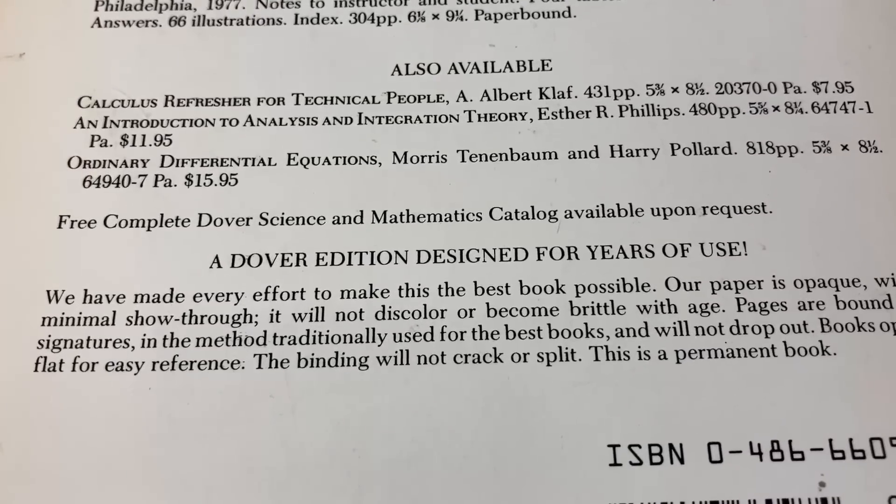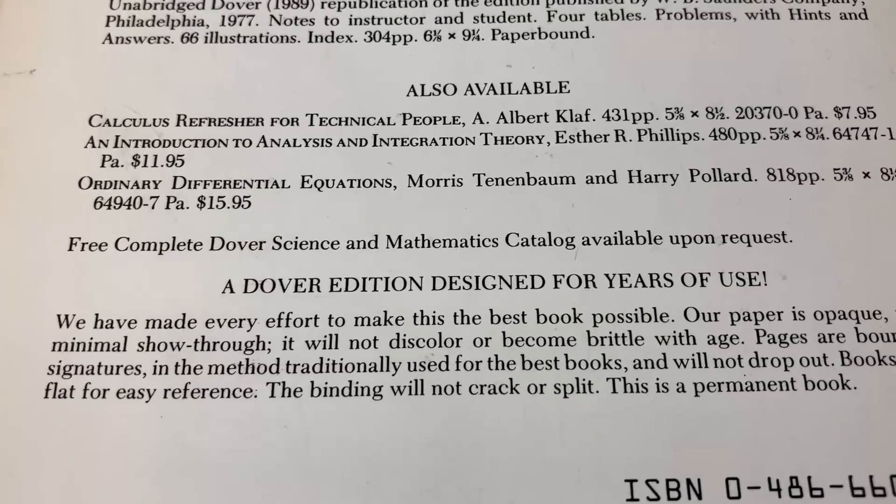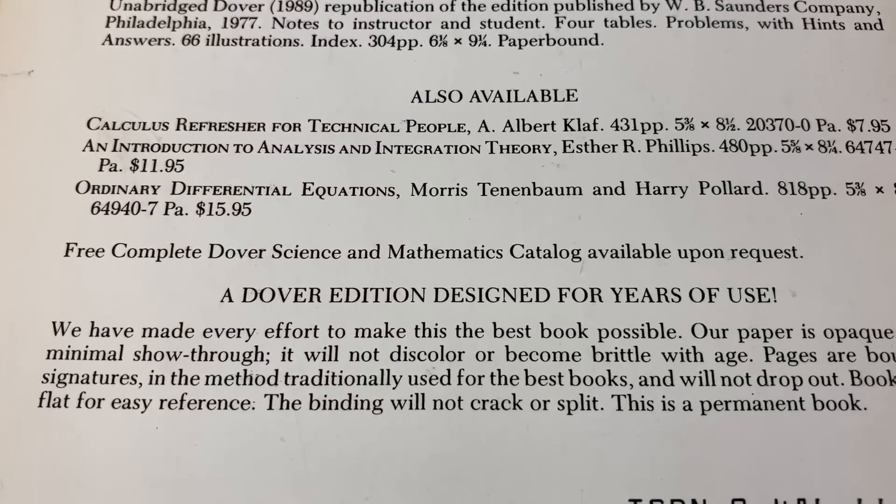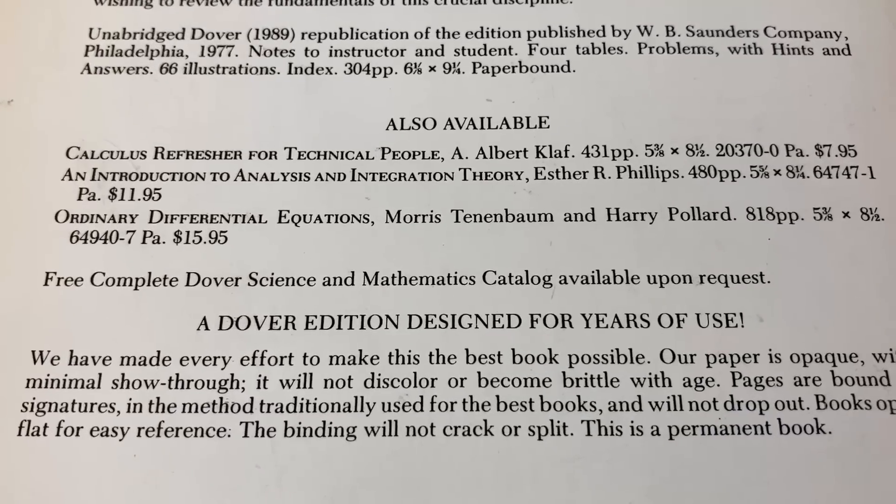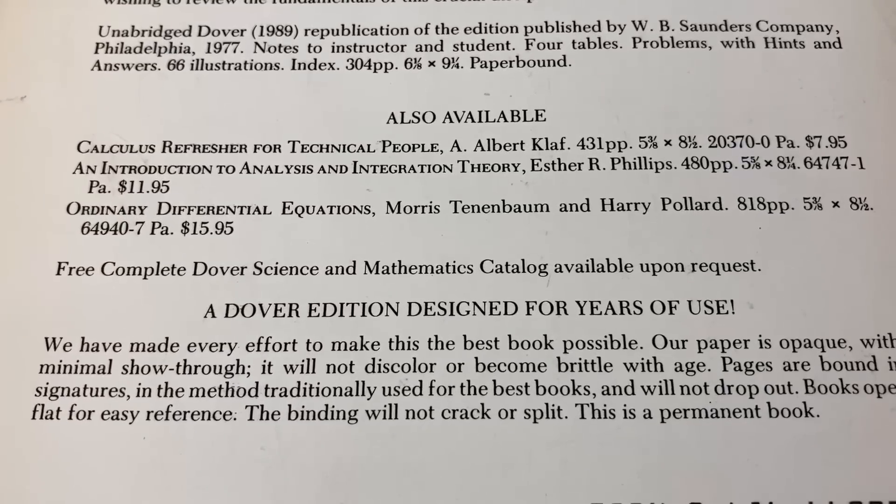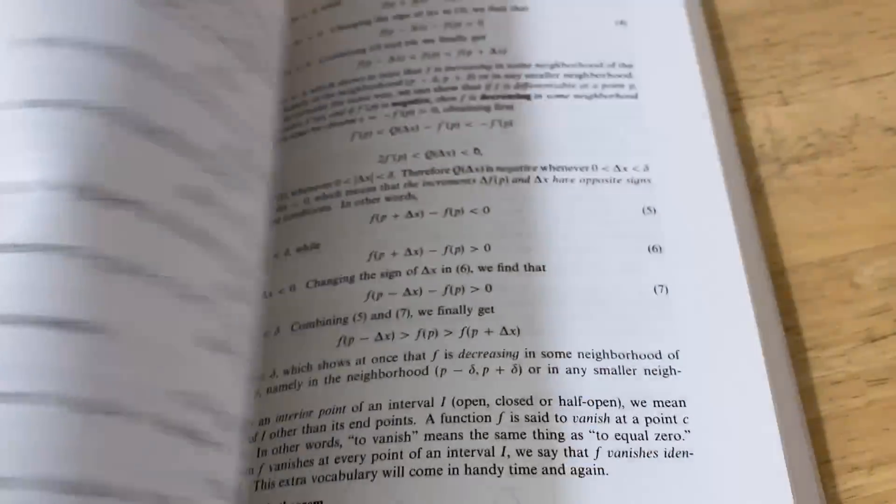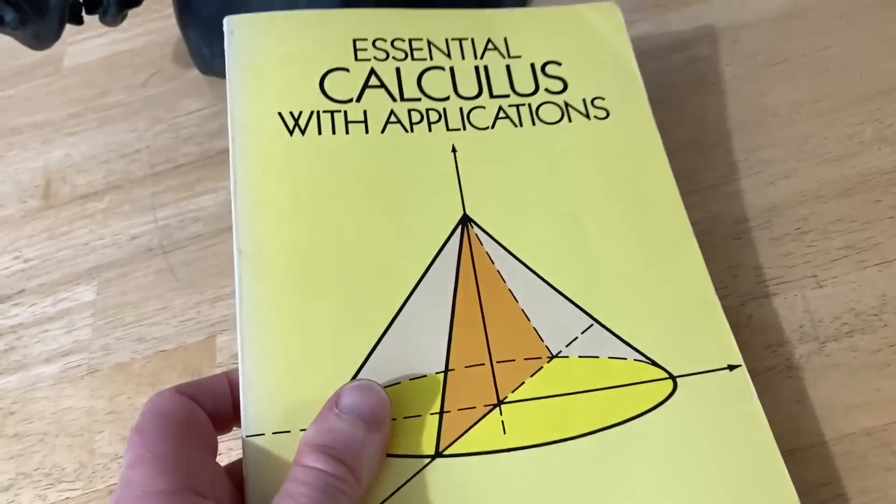I love this in the back. It talks about the quality of the book. A Dover edition designed for years of use. We have made every effort to make this the best book possible. Our paper is opaque with minimal show-through. It will not discolor or become brittle with age. Pages are bound in signatures in the method traditionally used for the best books and will not drop out. Books open flat for easy reference. The binding will not crack or split. This is a permanent book. And honestly, I have had this book for years. And even though it's a paperback, that's one of the things I really like about Dover books. Also, the price. This book is extremely affordable.